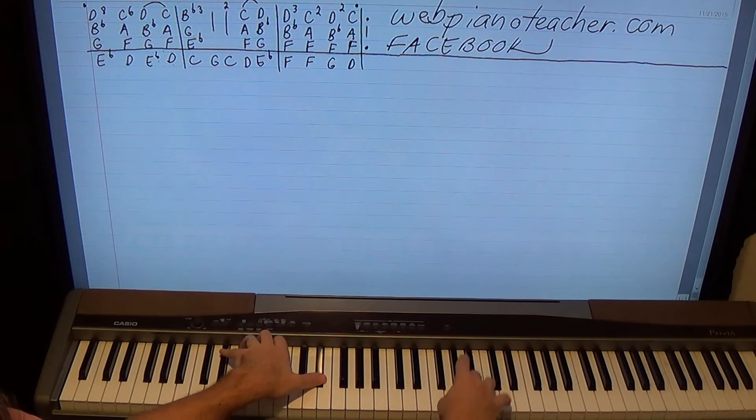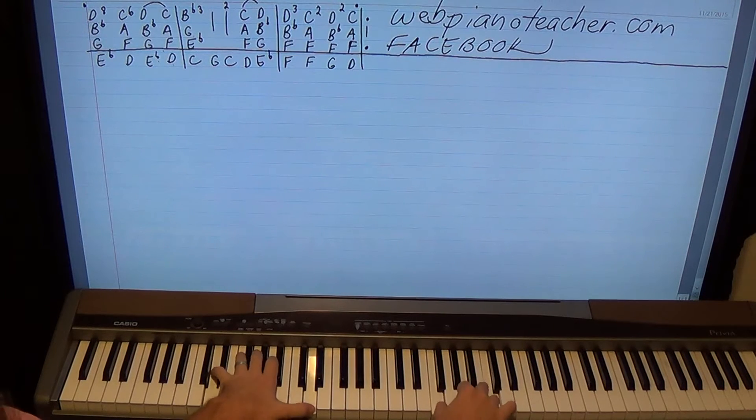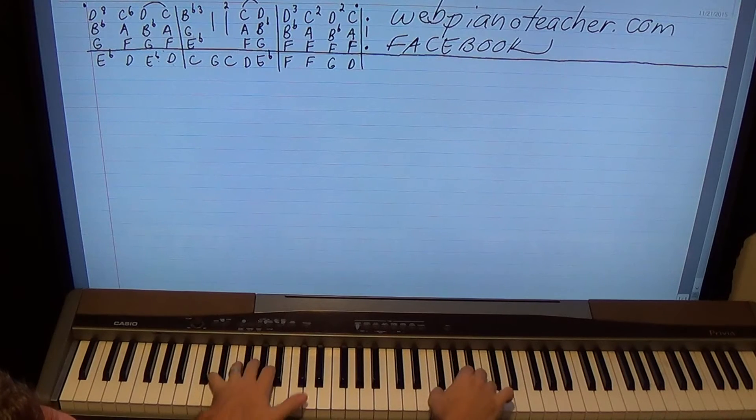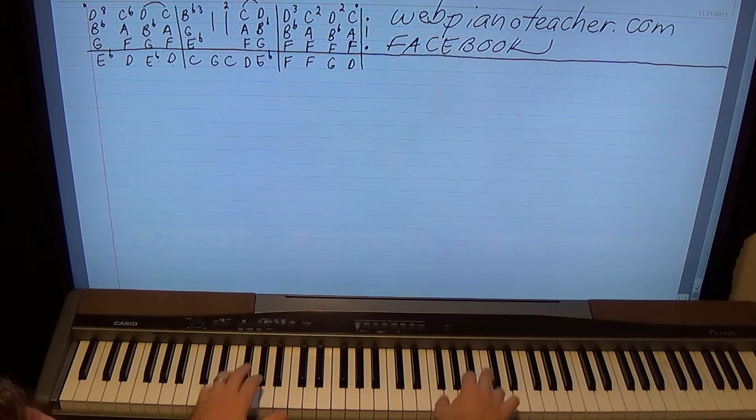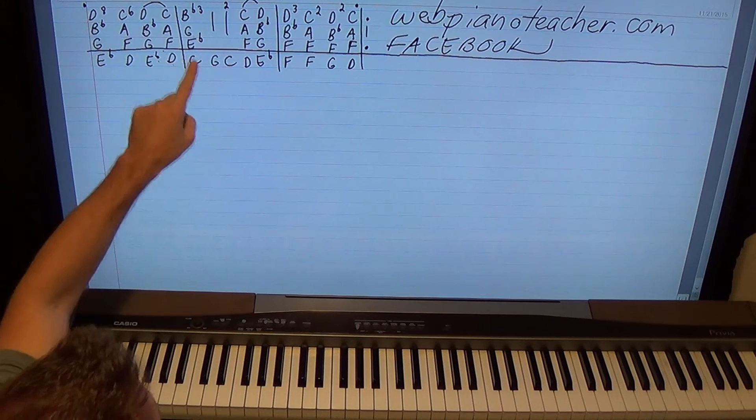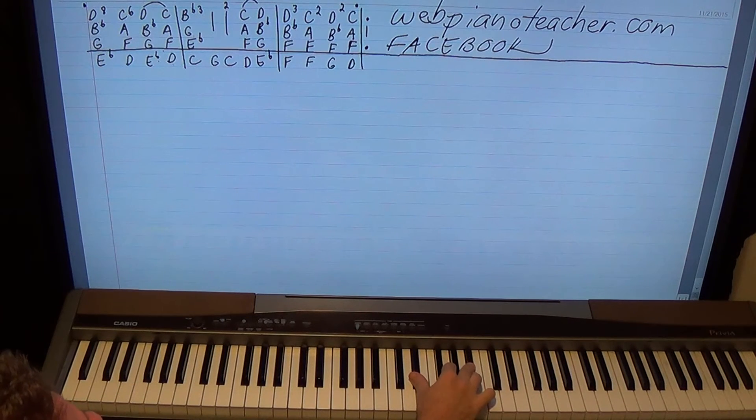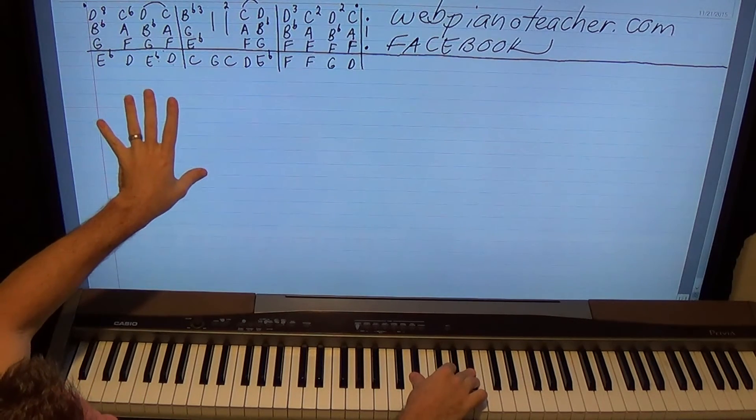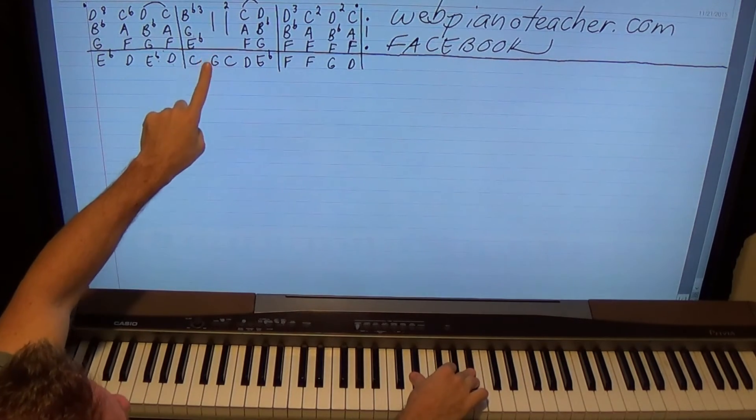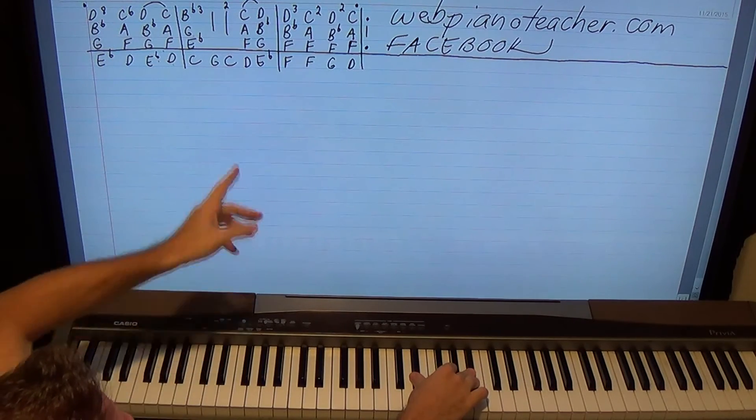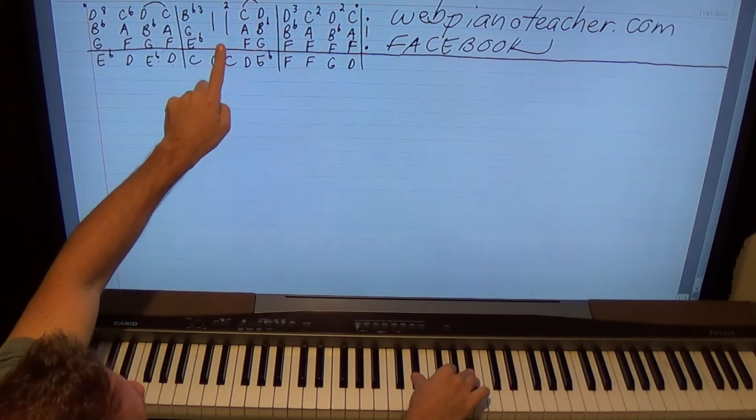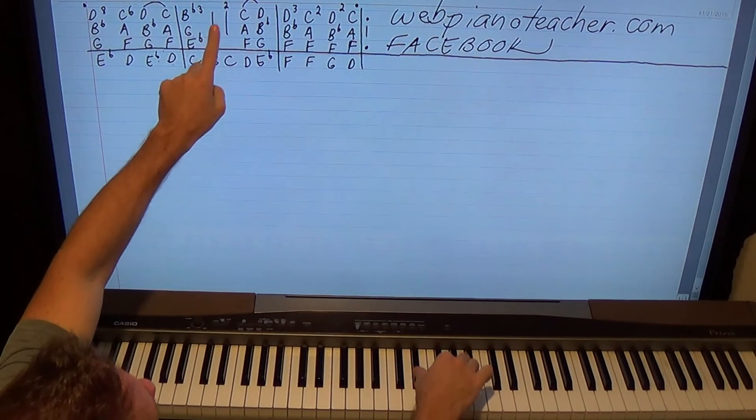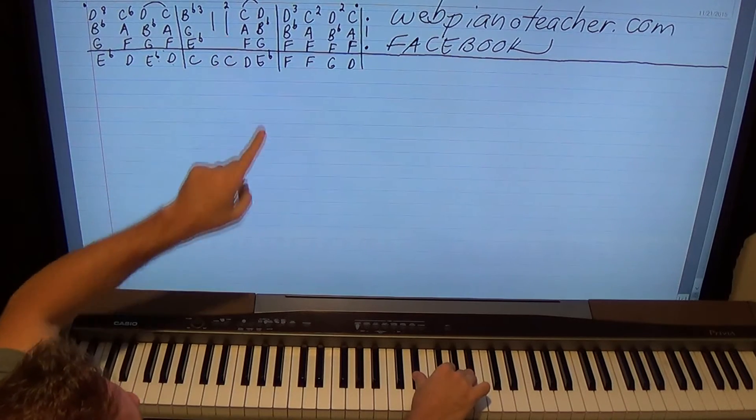Again? So here we have E flat, G, B flat, three times. Now I didn't write the chord again. This is kind of my shorthand. If it's the same chord and I already wrote it, I just put a vertical line and it means play the same chord again. So play that chord again. Then play it two more times. See the two there? So it's one, two, three, one, one, two.